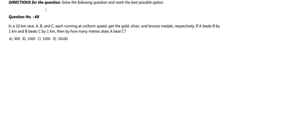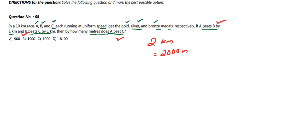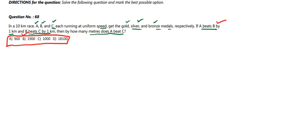Question 68: In a 10-kilometer race, A, B, and C each run at uniform speed and get the gold, silver, and bronze medals respectively. If A beats B by 1 kilometer and B beats C by 1 kilometer, by how many meters does A beat C? You might think A beats C by 2 kilometers or 2000 meters, but that option is not listed, so that approach is incorrect.